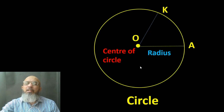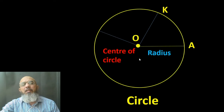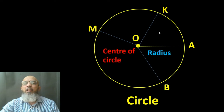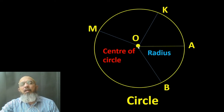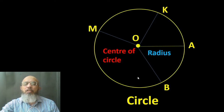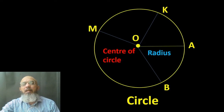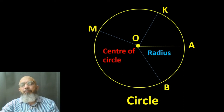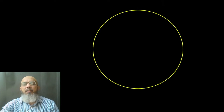We can name a radius like OA. I draw another radius OB, another OM, and another OK. If you look at the lengths of all four radii, they are all the same. The radius of a circle always remains the same. The plural form of radius is radii — keep that in mind.